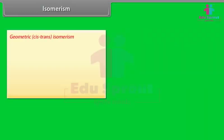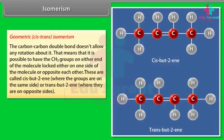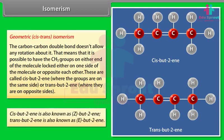Geometric Cis-Trans Isomerism: The carbon-carbon double bond doesn't allow any rotation. That means the CH3 groups on either end of the molecule are locked either on the same side or opposite each other. These are called cis-but-2-ene (groups on the same side) and trans-but-2-ene (groups on opposite sides). Cis-but-2-ene is also known as Z-but-2-ene, and trans-but-2-ene is also known as E-but-2-ene.